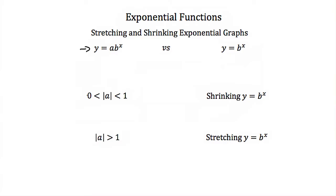If we wanted to find out what effect this a has on our function, we would first have to look at the function y is equal to b to the x. This function doesn't have an a, or its a is 1, so it has no effect on the y values. For every x value we have a b to the x value and that gives us our y. If we take this same b to the x value and we start multiplying it by a, we're going to get a different y value and we want to compare what these different y values look like.